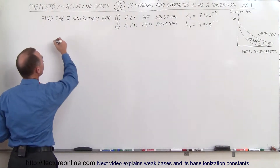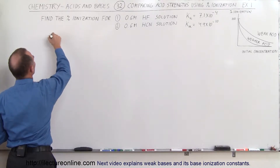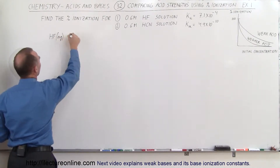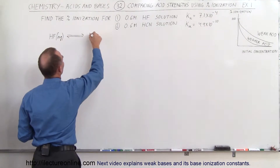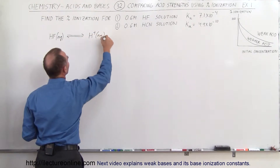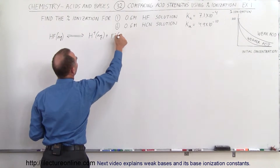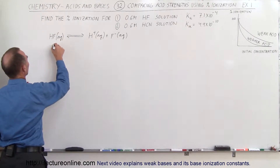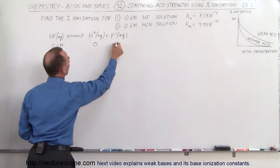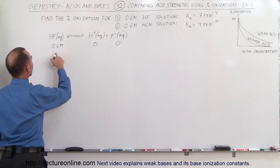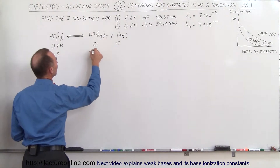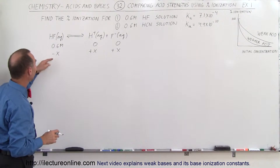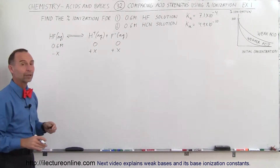First, we write down the equation. We start with hydrofluoric acid in aqueous solution, and it will partially ionize into the hydrogen ion and the conjugate base. Initially, we start with a concentration of 0.6 molar, 0 molar, and 0 molar. The change will be a decrease of X for HF, and an increase of X for each product. X is the increased concentration of the hydrogen ion and the fluoride ion.